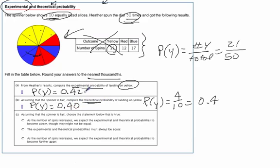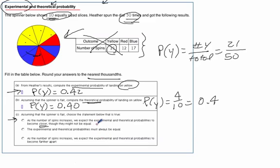Adding a zero so you can see how they compare: our experimental probability was 0.42, which is a little higher than our theoretical of 0.40. For Part C, assuming the spinner is fair, we need to choose the true statement. As the number of spins increases, we expect the experimental and theoretical probabilities to become closer, though they might not ever be equal.